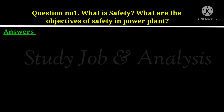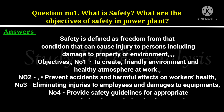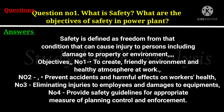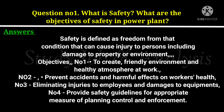Question number 1: What is safety? What are the objectives of safety in a power plant? Safety is defined as freedom from that condition that can cause injury to persons, including damage to property or environment. Objectives: 1. To create a friendly environment and healthy atmosphere at work. 2. Prevent accidents and harmful effects on workers' health. 3. Eliminating injuries to employees and damages to equipment. 4. Provide safety guidelines for appropriate measures of planning, control, and enforcement.